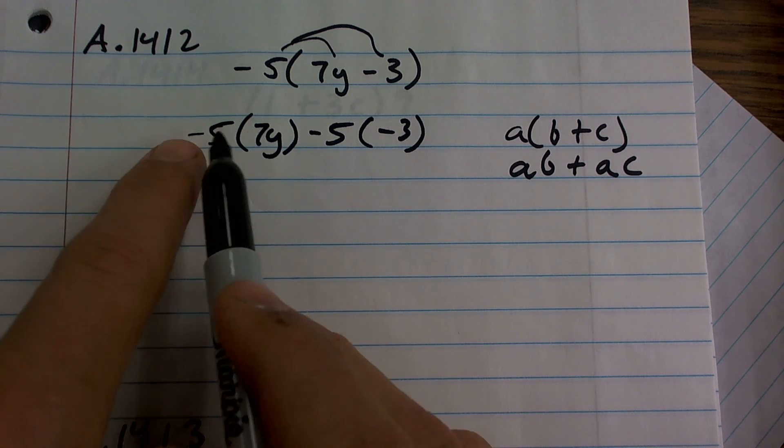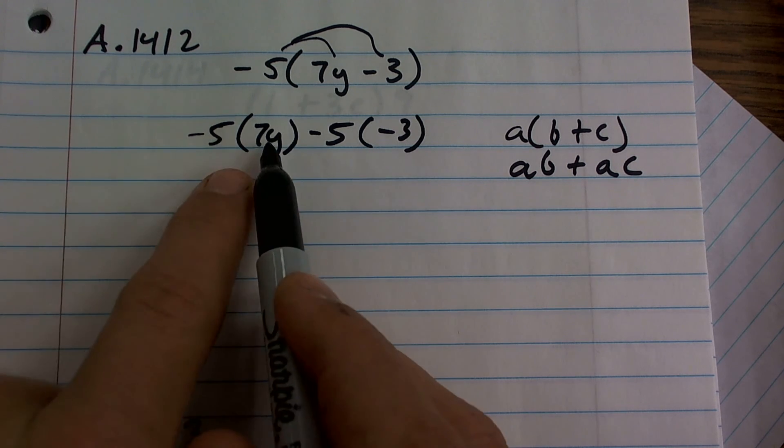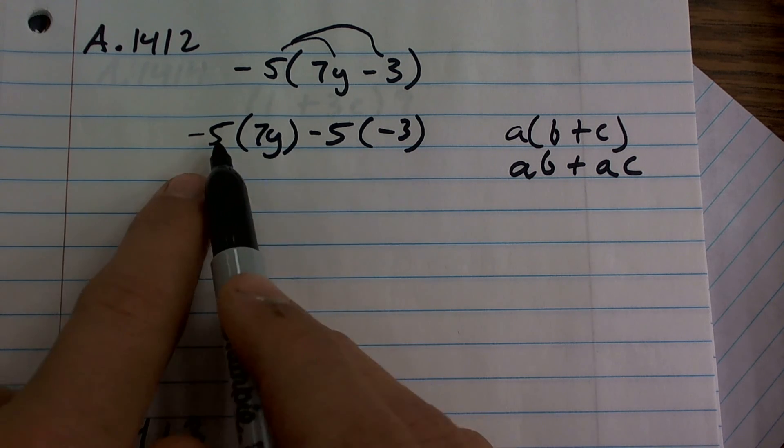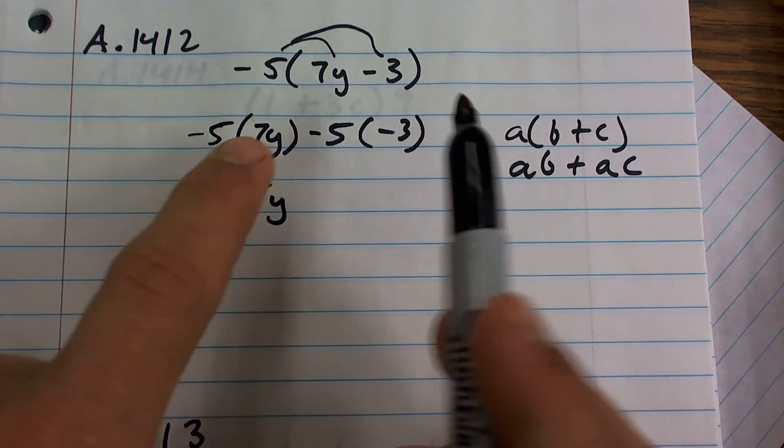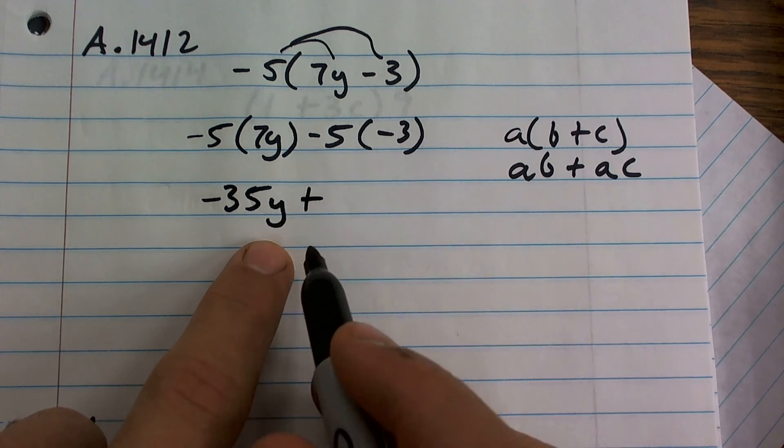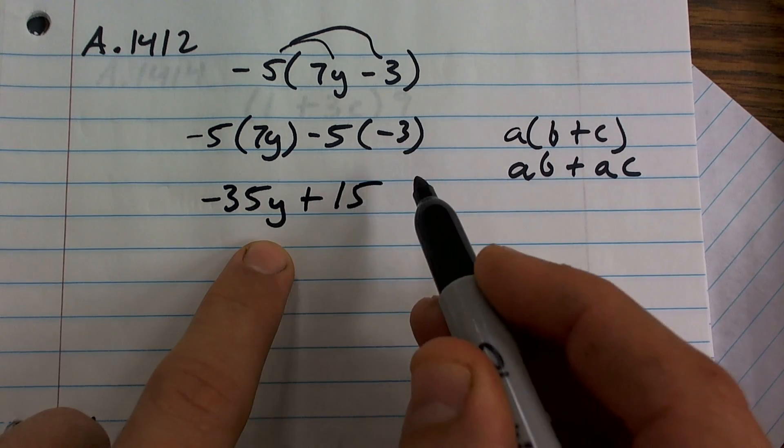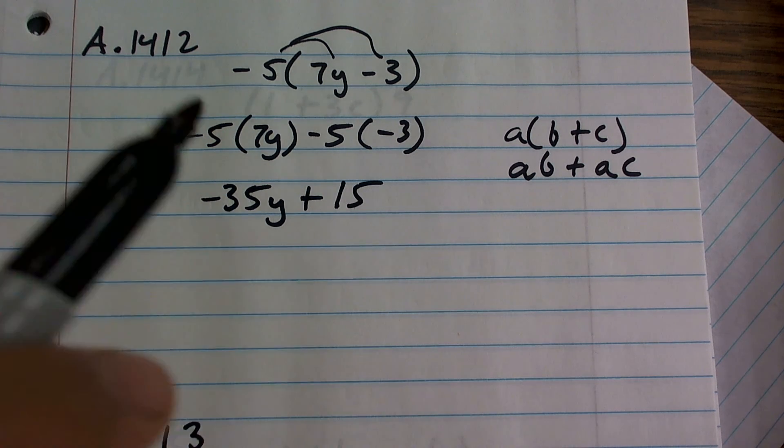So negative 5 times 7, remember when we multiply a number times a number multiplied by a variable, we multiply our numbers. So negative 5 times 7 is a negative 35y. Negative 5 times negative 3 and negative times a negative is going to produce a positive, 5 times 3 is 15. And therefore you can see that would be my simplified answer for that problem.